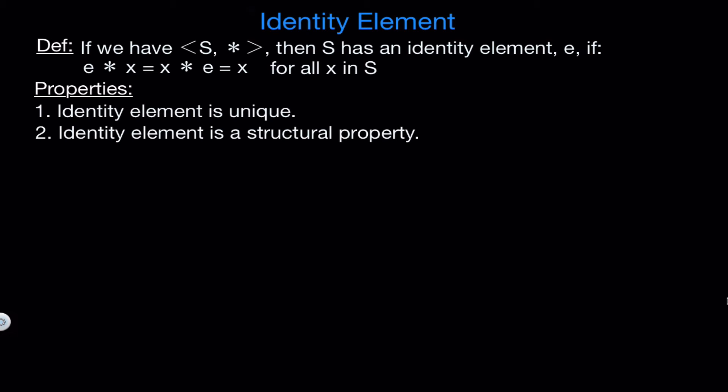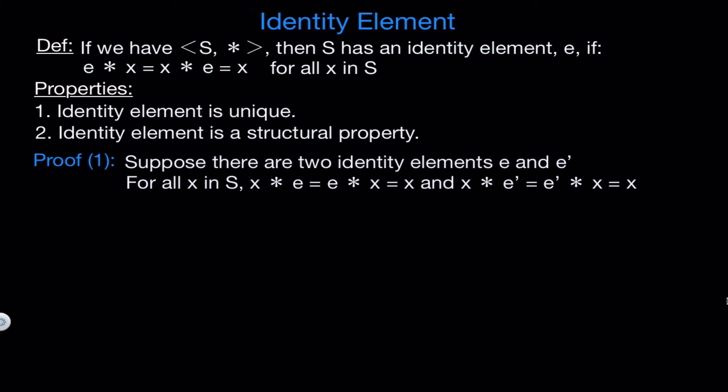Let's go ahead and prove these two properties. We'll start with number 1. So let's prove the identity element must be unique. In order to do that, let's try to assume it doesn't need to be unique. So suppose our structure has two identity elements, e and e', then of course for all x in S, we have x star e equals e star x which equals x, and we also have x star e' equals e' star x which equals x.